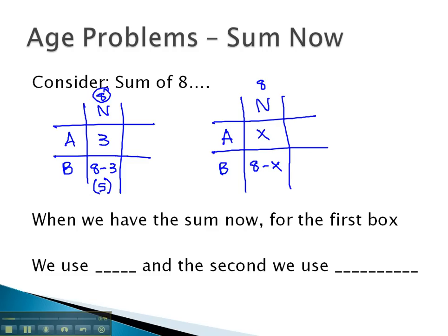We find when we have the sum now, for the first box, we will use x, and the second box, we will always use total minus x.